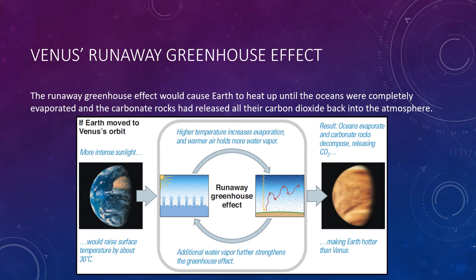The runaway greenhouse effect would cause Earth to heat up until the oceans were completely evaporated and the carbonate rocks had released all of their carbon dioxide back into the atmosphere. By the time the runaway process was complete, temperatures on our moved Earth would be even higher than they are on Venus today, thanks to the combined greenhouse effects of carbon dioxide and water vapor. The water vapor would then gradually disappear as ultraviolet light broke apart the water molecules and the hydrogen escaped back into space. In short, moving Earth to Venus's orbit would essentially turn our planet into another Venus.